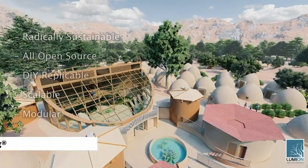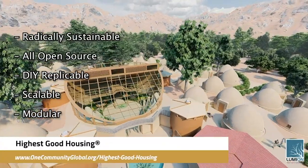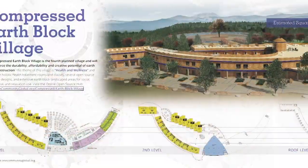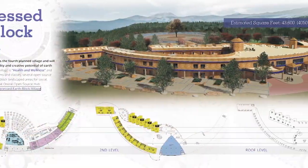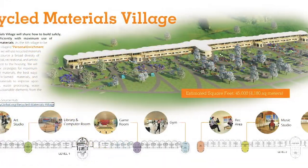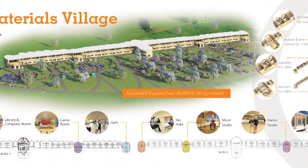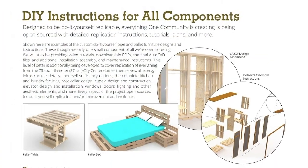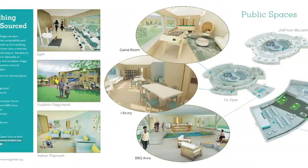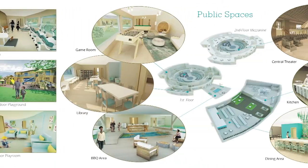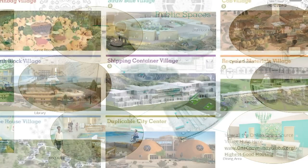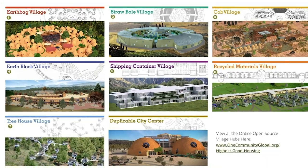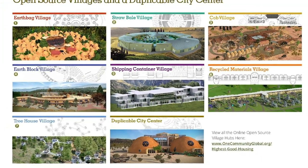The One Community approach to highest good housing is eco-artistic home building that is affordable, sustainable, do-it-yourself duplicable, resource and space efficient, and consists of seven different sustainably constructed village models.